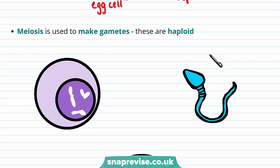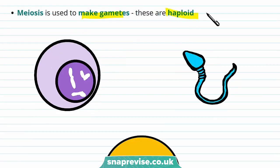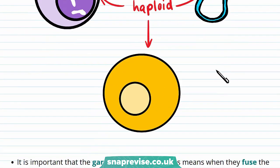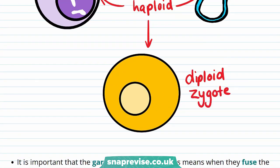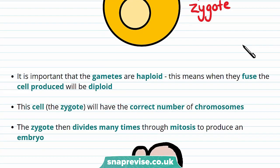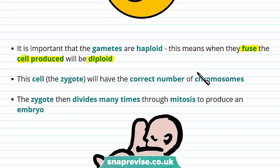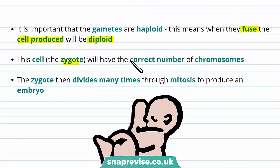So in this diagram you can see that the sperm is joining with the egg cell during fertilisation. Meiosis is used to make gametes and these gametes are haploid. So this egg cell and the sperm cell are both haploid. These then join together to produce something that's diploid — the diploid zygote. It's important that gametes are haploid because when they fuse together the zygote produced will be diploid.